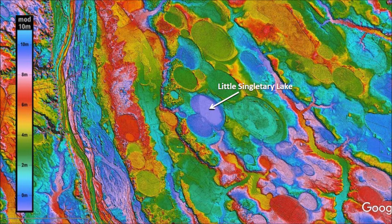Welcome to another edition of the Carolina Bay of the day, where we study the secondary impacts made by the glacier ice boulders that were ejected by one or more extraterrestrial impacts on the Laurentide Ice Sheet. Today we will examine Little Singletary Lake, located 28 kilometers or 17 miles southeast of Fayetteville, North Carolina. This area has a river, a creek, mud splashes, erosion, and overlapping bays that can be explained by several geological mechanisms.